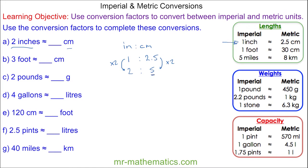For question B, we're going to convert between feet and centimeters, which is this conversion, which again we can write as a ratio, feet to centimeters, which is 1 to 30. And because we want 3 feet, we'll multiply the left-hand side by 3. We'll multiply the same on the right-hand side, so we get 90 centimeters.